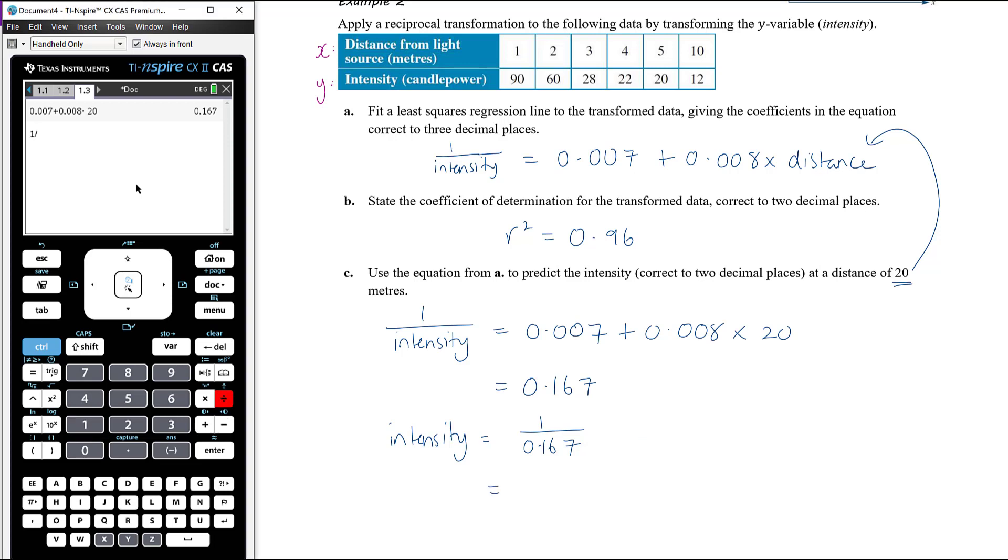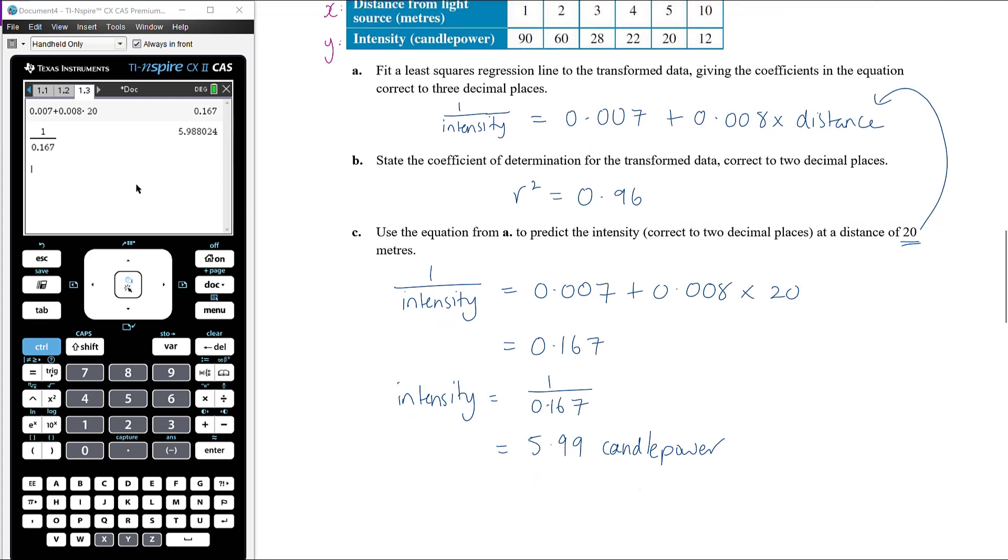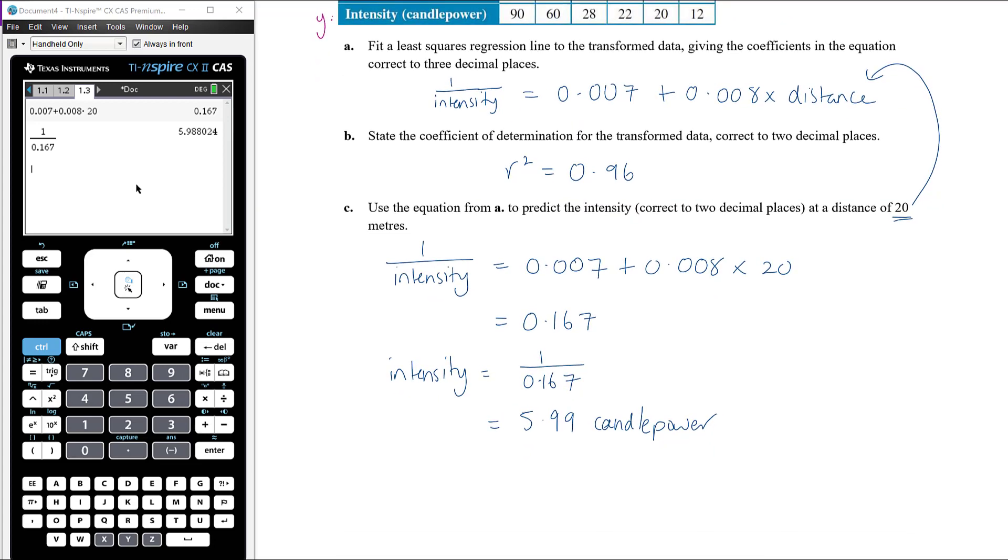The units seem to be candle power, 5.99 candle powers. Again, you don't need to do the solving manually by hand. You've got your equation up here; you could solve that immediately. So menu 3 1, solving. 1 over, don't bother typing intensity in here, 1 over y equals 0.007 plus 0.008 times 20. Solve that for y, and you get your same solution. So you can straight away, once you've written down your equation, then solve it. Use your CAS to solve it.